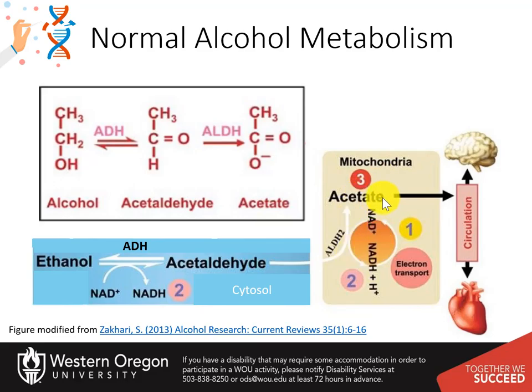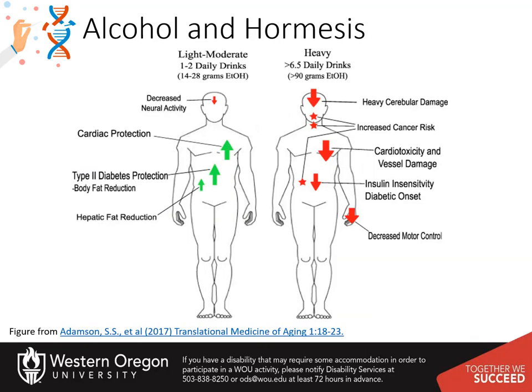Liver mitochondria have a limited capacity to use the acetate in the Krebs cycle because the enzyme needed to convert acetate to acetyl-CoA, acetyl-CoA synthase 2, is almost absent in the liver but is abundant in the heart and skeletal muscles. Thus, most of the acetate resulting from ethanol metabolism escapes the liver into the blood circulation and is eventually metabolized to carbon dioxide by way of the Krebs cycle in cells with mitochondria that contain enzymes to convert acetate to acetyl-CoA, such as the heart, skeletal muscle, and brain.